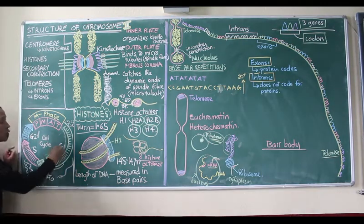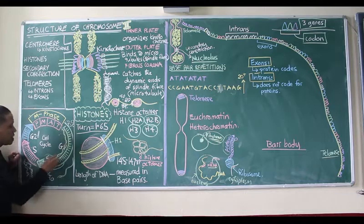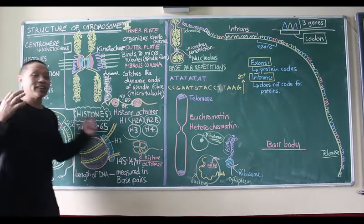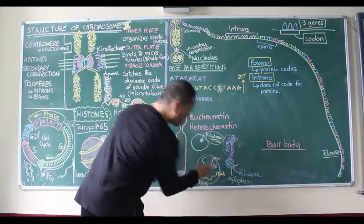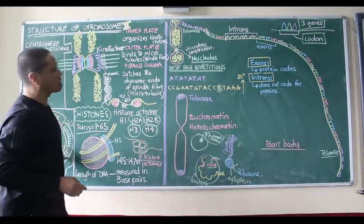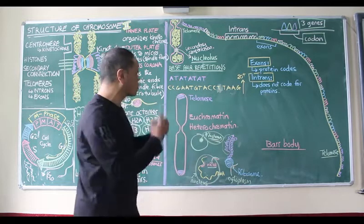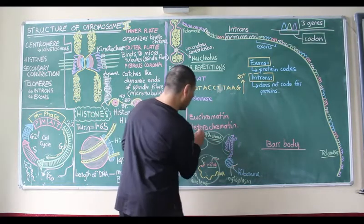When I talk about the G1 phase, I said the DNA uncoils, but in reality not all the DNA uncoils itself in the G1 phase. There are some DNA which remains closed, and those kind of DNA are known as heterochromatin.